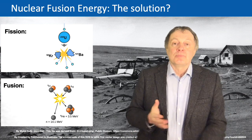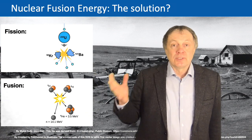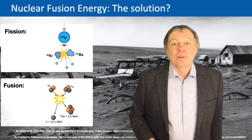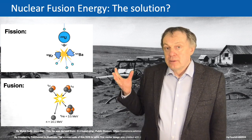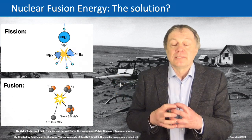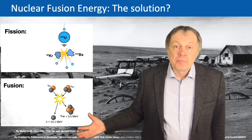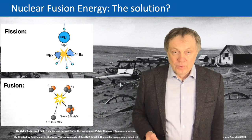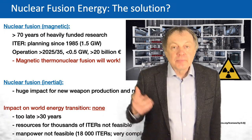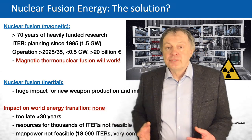There are two types of nuclear fusion: magnetic fusion and inertial fusion. For magnetic fusion, research has been ongoing for about 70 years and is heavily funded because many physicists believe this is the future of our energy system. One of the major recent projects is the so-called ITER — a global project whose planning started in 1985, originally planned to produce 1.5 gigawatt of electrical power.